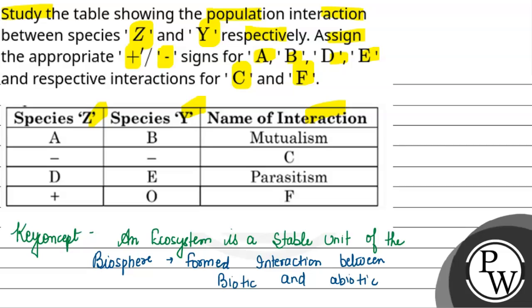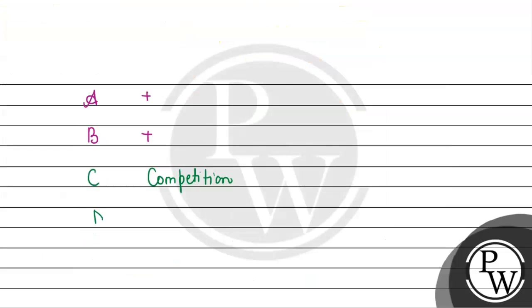And then we have to look at D and E. Where is parasitism? Parasitism - positive and negative.